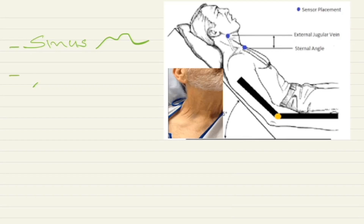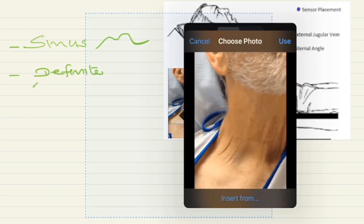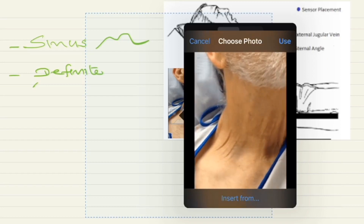Second point: JVP has a definite upper level. For example, when the JVP is elevated, you can see it has a definite upper level, as shown in this picture. Pulsation occurs up to a particular point — that is the second point to be kept in mind.